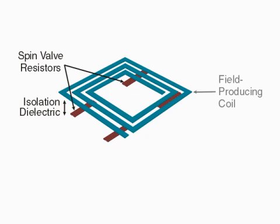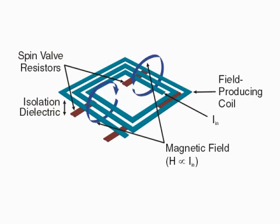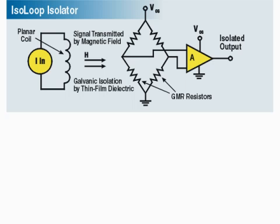The coil creates a magnetic field proportional to the input current. The field changes the spin polarization of the spin valves, which changes their resistance. The output is amplified and conditioned to produce an isolated replica of the input.